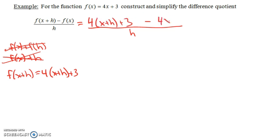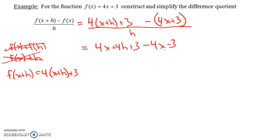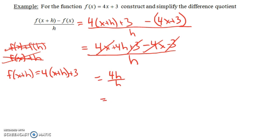And then we're subtracting f of x, which is (4x plus 3), and we must put that in parentheses because we're subtracting the whole thing. So this equals 4x plus 4h plus 3 — distributing the 4 — minus 4x minus 3, all over h. Notice the plus 3 and minus 3 cancel, and the 4x and minus 4x cancel, leaving us with 4h over h. And that simplifies to just 4. So the difference quotient of this linear function is the constant 4.